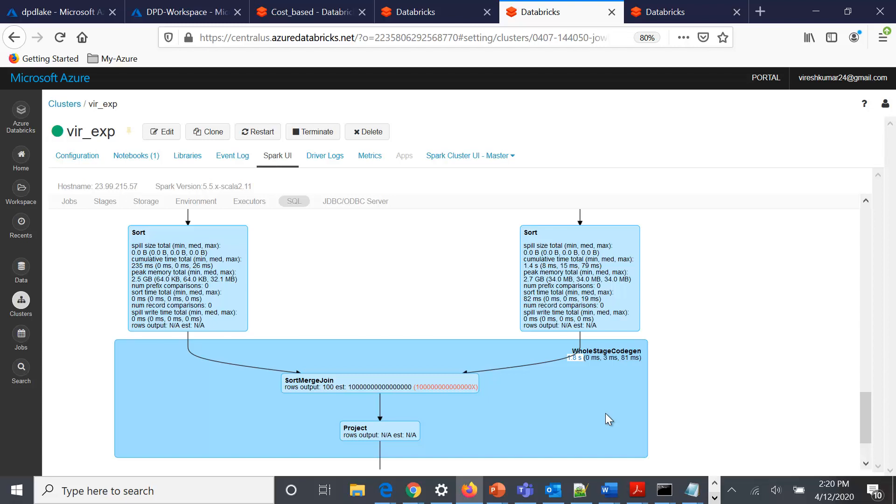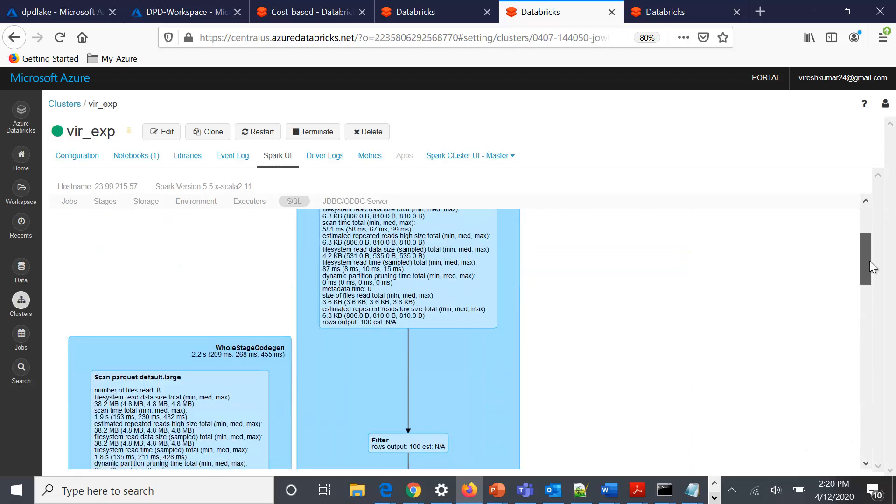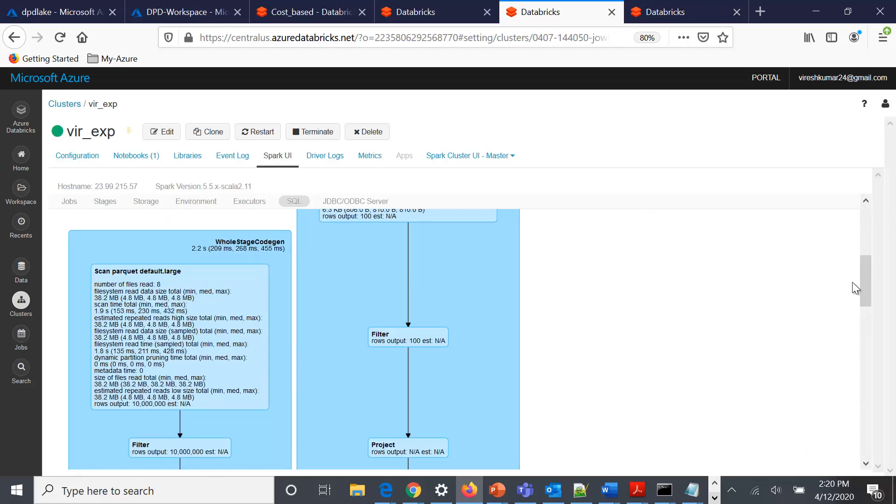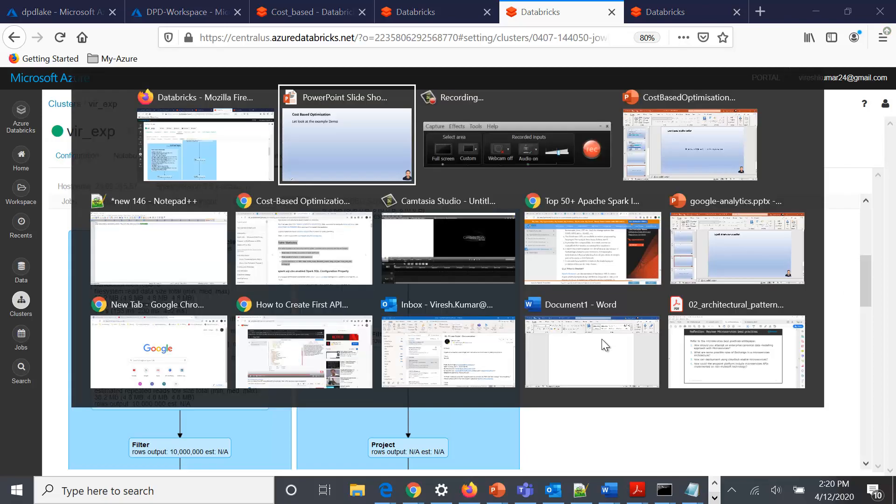We've also seen here that joins are reordered based on the statistics submitted for different tables involved. That's what we have in this particular video for cost-based optimization in Spark SQL. Thanks for watching.